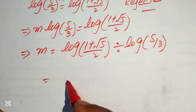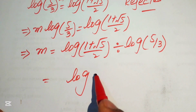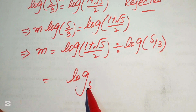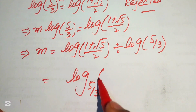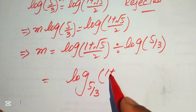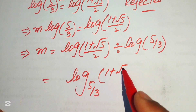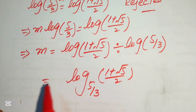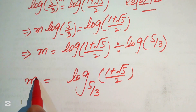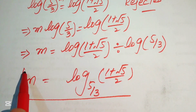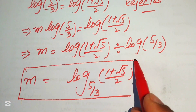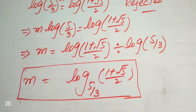We write this expression using change-of-base notation as m equals log base (5/3) of (1 + √5)/2. This is the value of m and the final answer. Thank you so much for watching this video — please subscribe to my channel for more exciting videos.